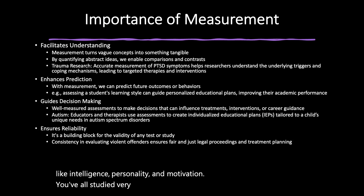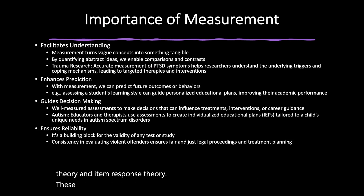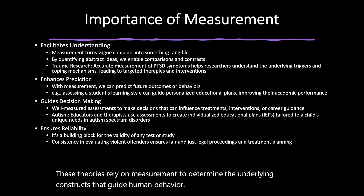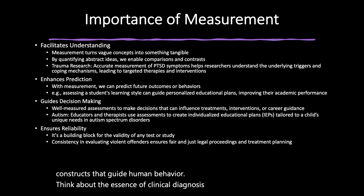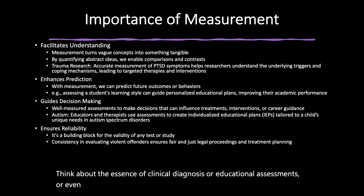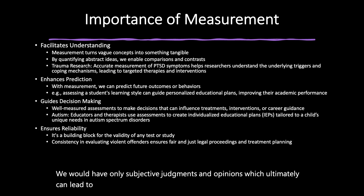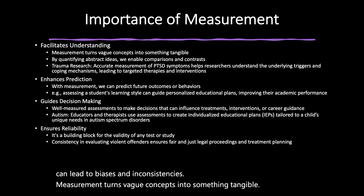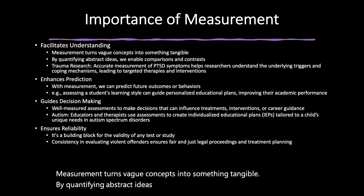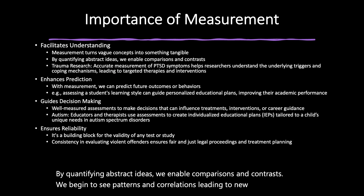We've all studied various models of psychometrics, including classical test theory and item response theory. These theories rely on measurement to determine the underlying constructs that guide human behavior. Think about the essence of clinical diagnoses, educational assessments, or even evaluating job candidates. Without proper measurement, we would have only subjective judgments and opinions, which can lead to biases and inconsistencies. Measurement turns vague concepts into something tangible — by quantifying abstract ideas, we enable comparisons and contrasts, and we begin to see patterns and correlations, leading to new theories and models.